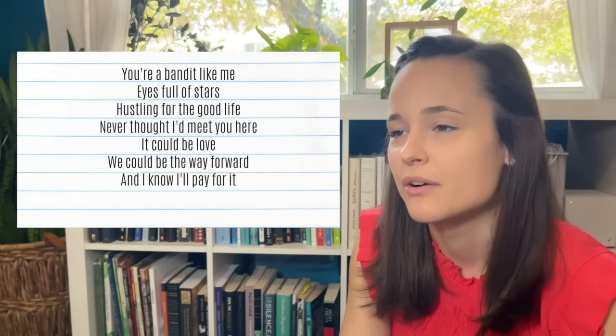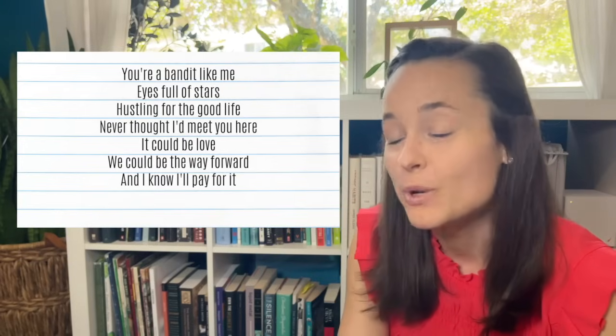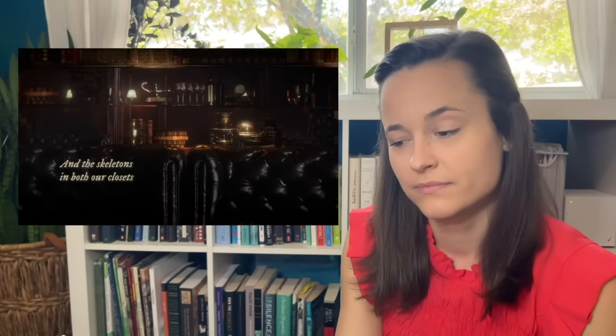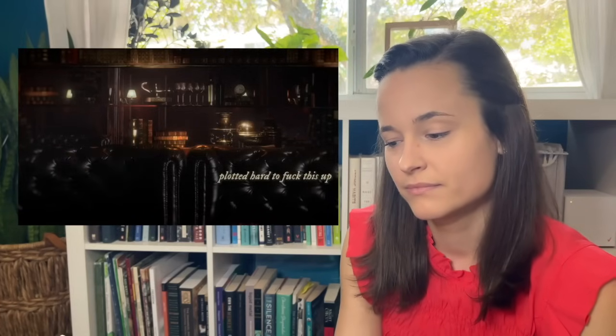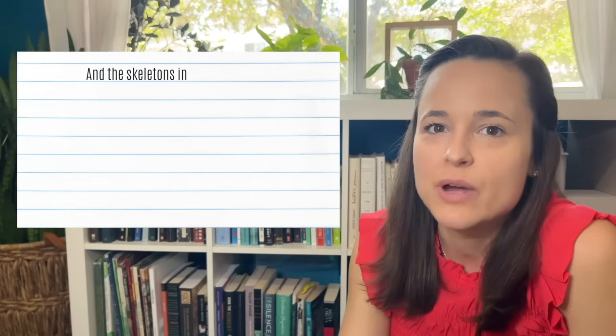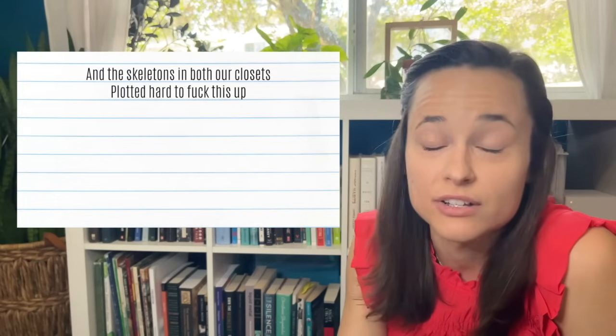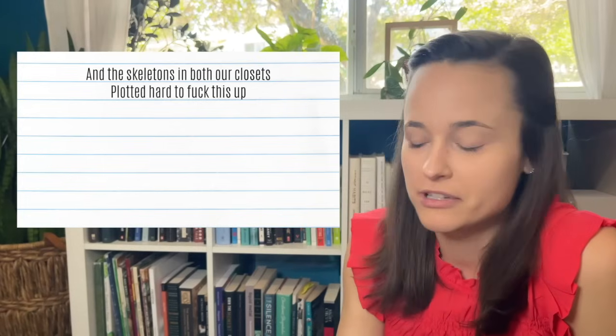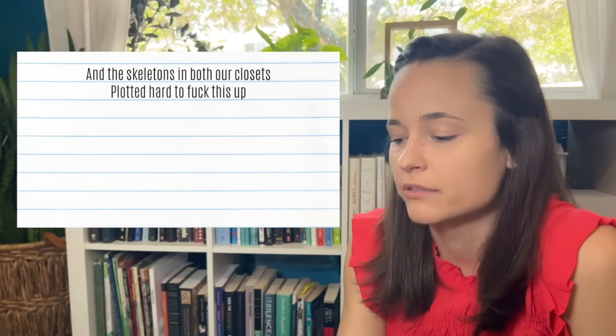Never thought I'd meet you here. It could be love. So she wasn't expecting to fall in love with another one of these hustlers. We could be the way forward. So actually we could have something new and have something good and real. And yet she says, I know I'll pay for it. So it's probably not a good idea. It ties back again to dancing is a dangerous game. If you have skeletons in your closet, it means that you have things from your past that could come back to haunt you if they got out of the closet. So you don't want your skeletons to come out of the closet. And if they're plotting hard to mess up a relationship, it just ties back to the idea of they both have a history of hustling people. And so now they're trying to commit to one another maybe. And all of that history is putting a strain on their relationship, which makes sense. It's making it hard because they're not used to that. And they're both cowboys. They're loners.